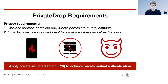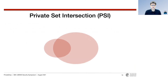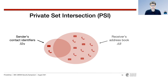Private Set Intersection protocols — PSI in short — are cryptographic protocols that allow two parties to compute the intersection of their input sets without disclosing any data outside of the intersection. For example, the AirDrop sender can input their contact identifiers and the AirDrop receiver can input their address book to determine whether the receiver knows the sender, which is the case for a non-empty intersection.